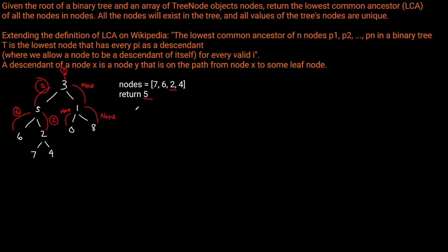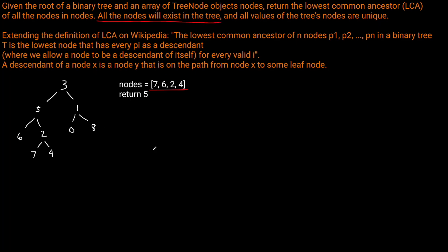Solving this question is extremely straightforward. All we need to do is use the same algorithm we used for LCA of a binary tree 1, except instead of checking whether the node equals P or Q, we check if the current node is in our nodes list. We can do the exact same processing as LCA 1, and this works because we're guaranteed all nodes exist in the tree. I don't know why LeetCode created this problem — it's the exact same thing.